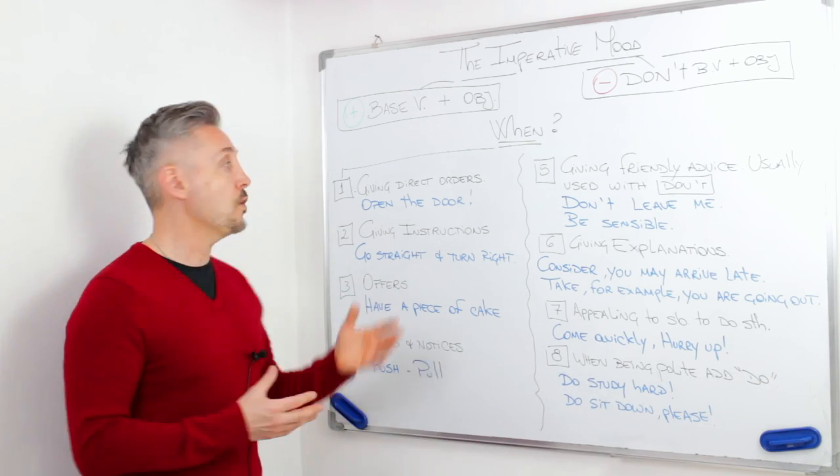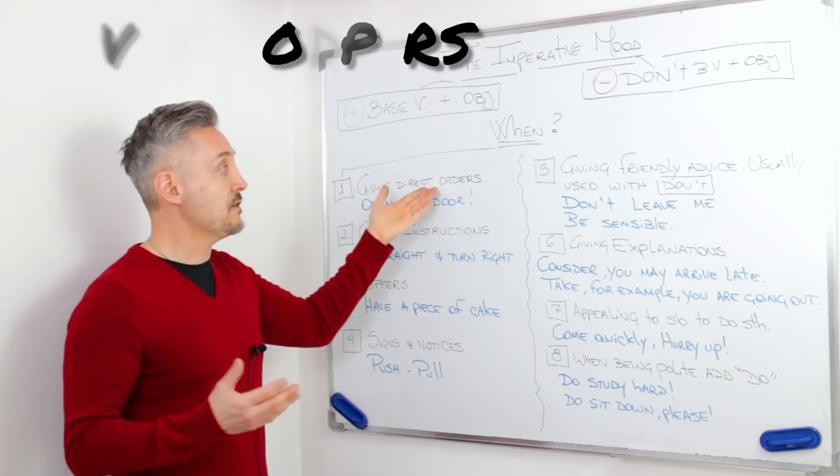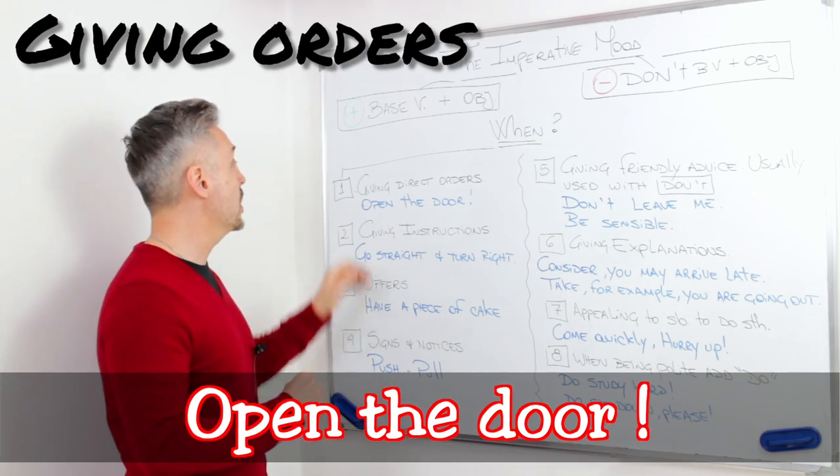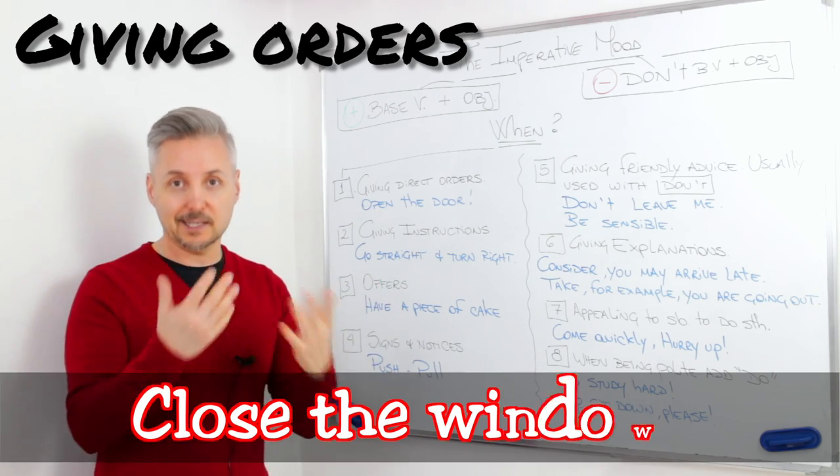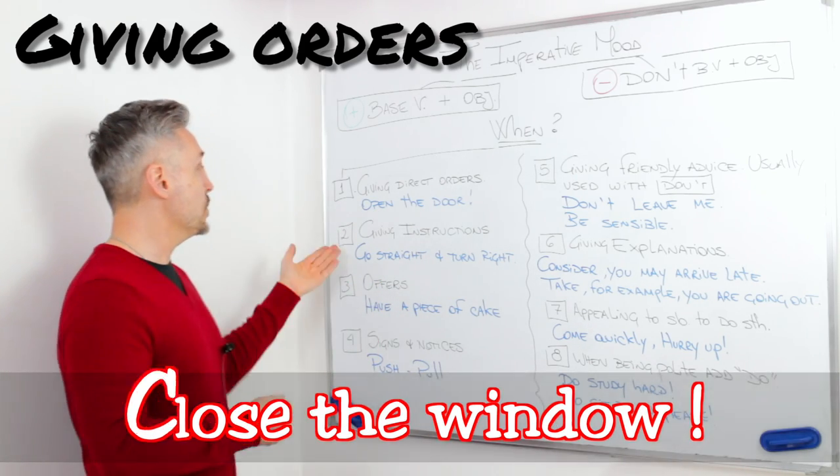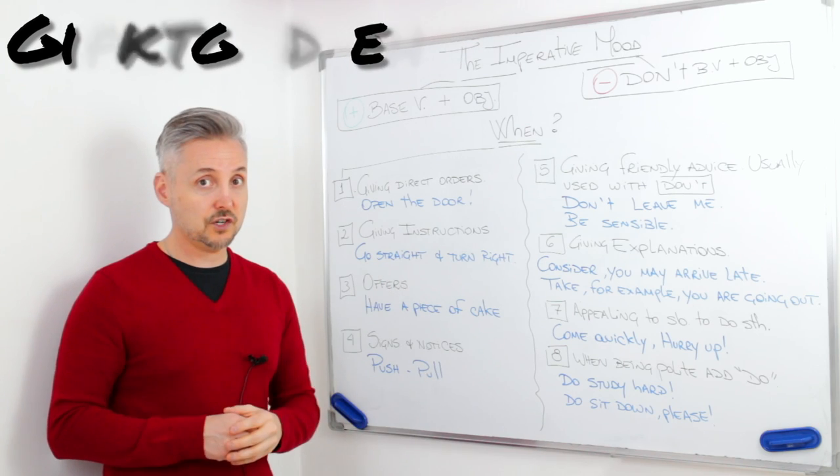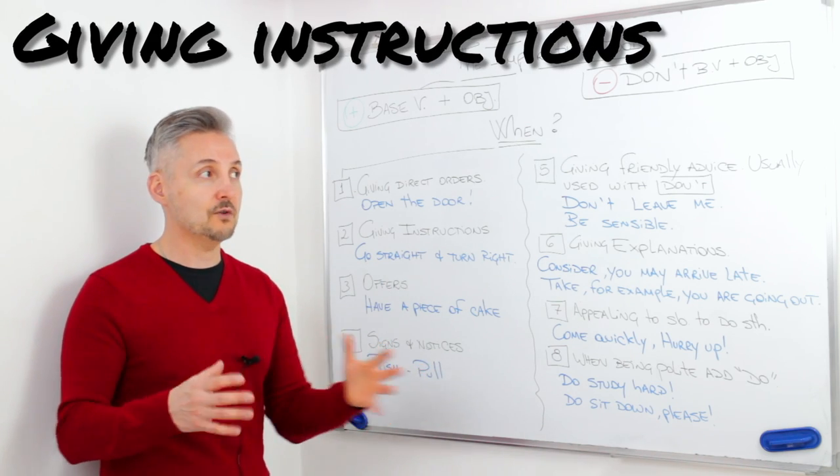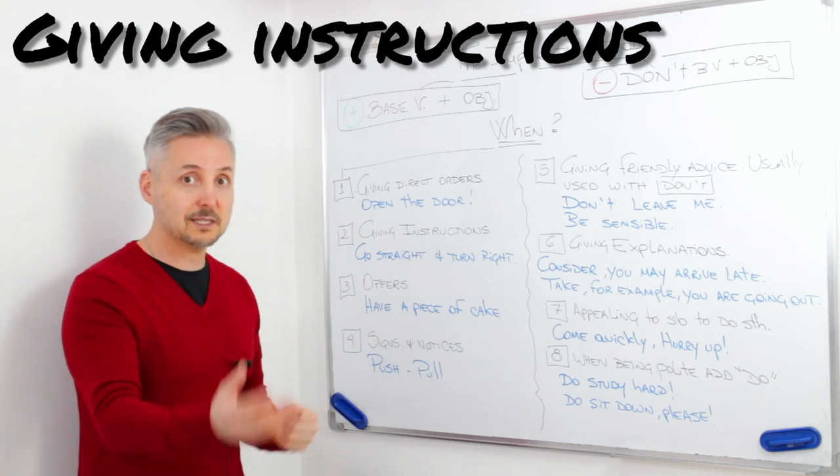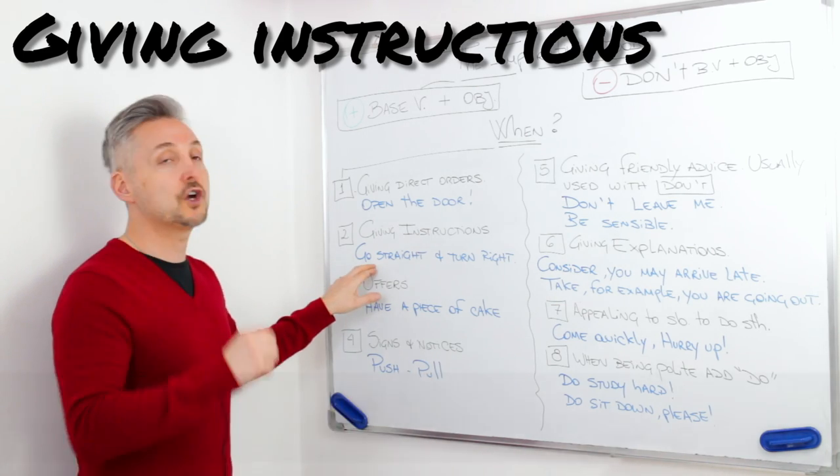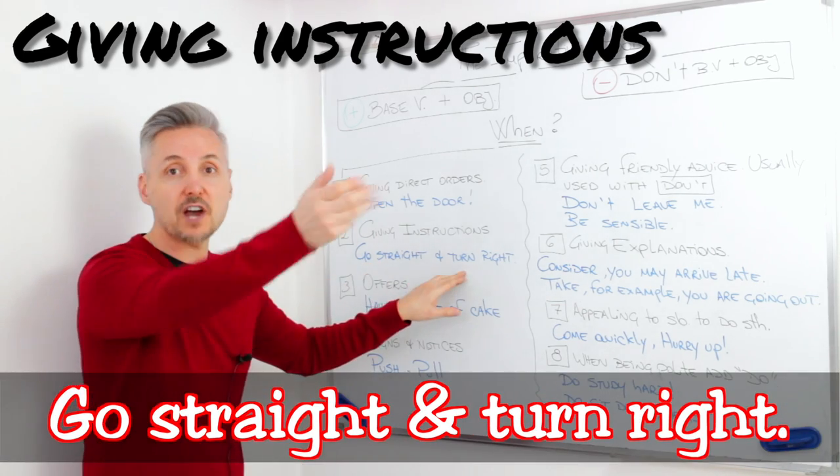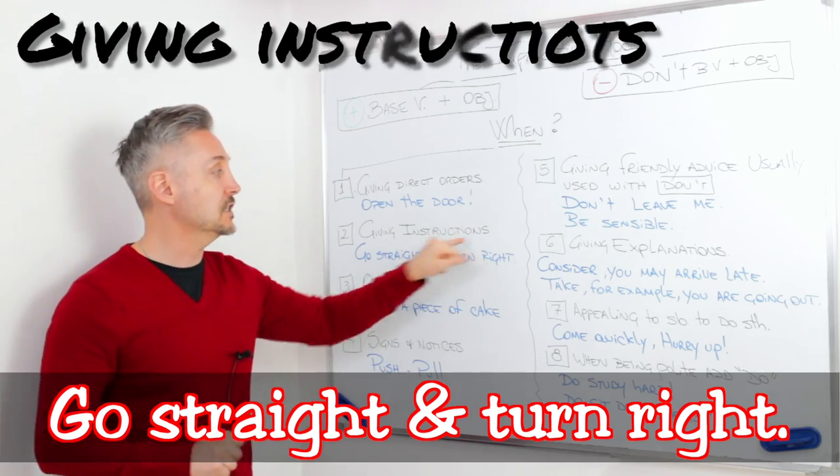So when do we use this? We use it for giving direct orders. So open the door, close the window, etc. We also use it for giving instructions. So you're lost and you want to get somewhere, you ask somebody, and they answer back to you. Go straight and turn right is an instruction.